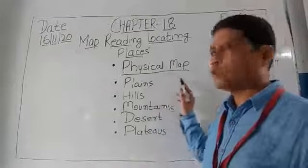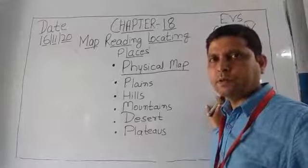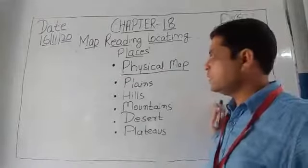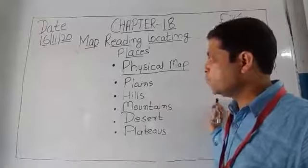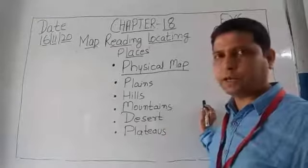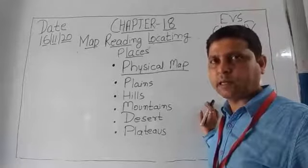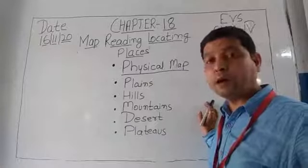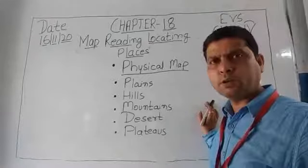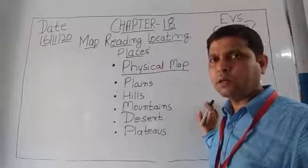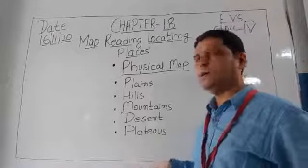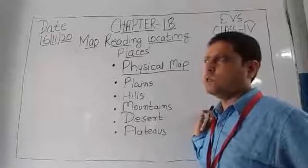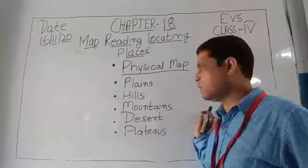When you observe the surface of the earth, you will see some parts have hills, somewhere plains, somewhere mountains, and some areas are desert. Desert is a place where rainfall is very less or there is no rainfall. That is the reason the land and soil break up and change into the form of sand, because the percentage of water in the soil is very less.